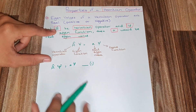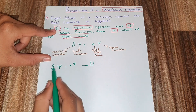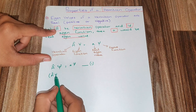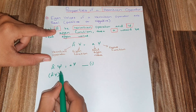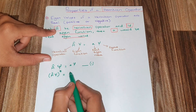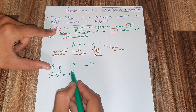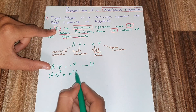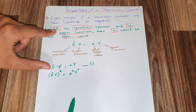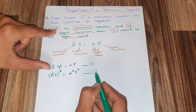Next, let's take the complex conjugate of equation one. After taking the complex conjugate, the asterisk sign appears, and the answer comes out to be A*·psi*. Let's call this equation number two.